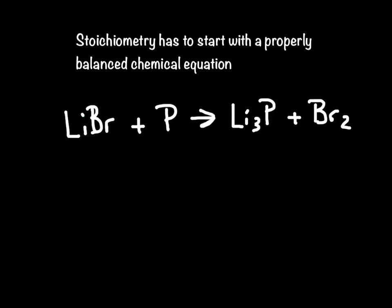A fundamental starting point for stoichiometry is a properly balanced chemical equation. This one is not balanced. If you don't know how to balance chemical equations, you need to go back and watch the video 'Balancing Chemical Equations,' because otherwise you really can't even start stoichiometry right. Now it is balanced. Those coefficients in front for the balancing mean something in stoichiometry, which we're about to find out.